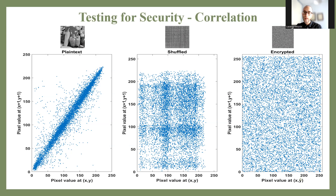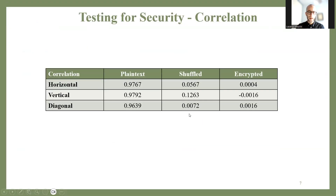I tested diagonal adjacent pixels here, but if you consider vertical or horizontal adjacency you get the same result — I just print one. Looking at the mathematically computed correlation values: for the original image, in all three cases the correlation is very close to one. For the shuffled image it significantly drops, almost close to zero. For the encrypted image, it's very, very close to zero — on the order of 10 to the minus three. So we are very close to zero correlation for the encrypted image, and this is the desired result.